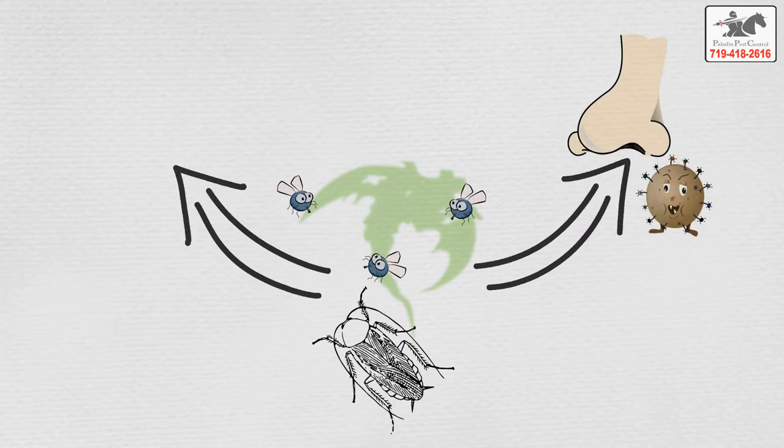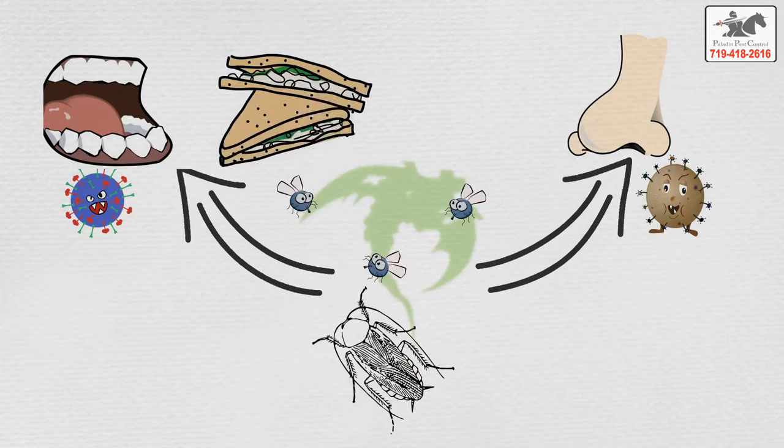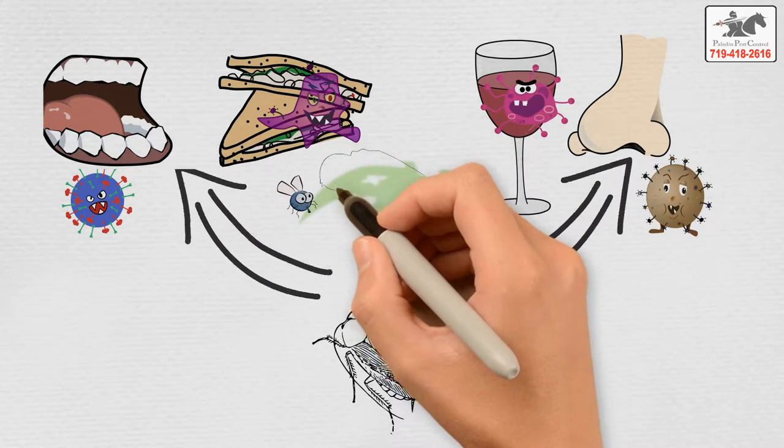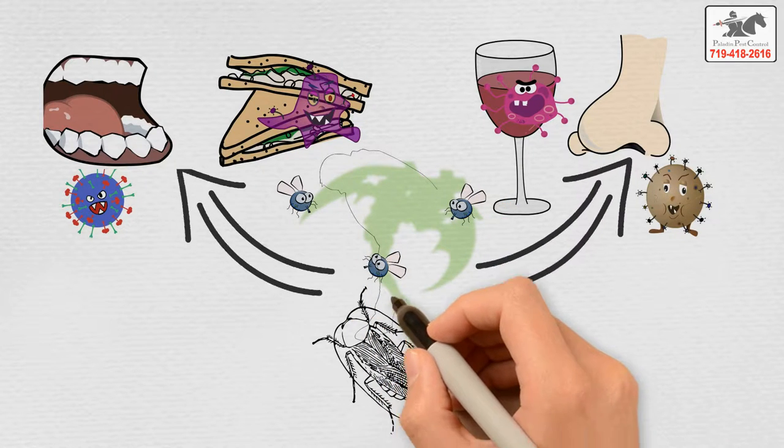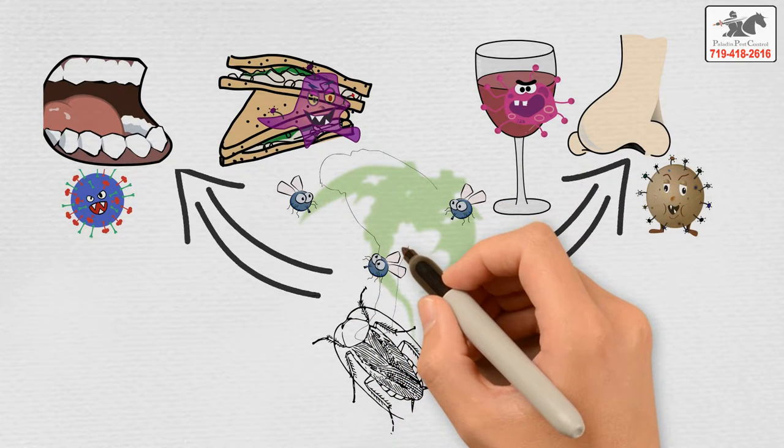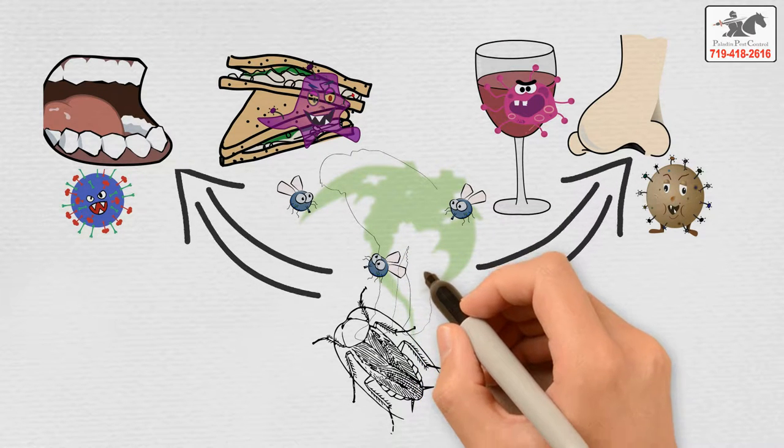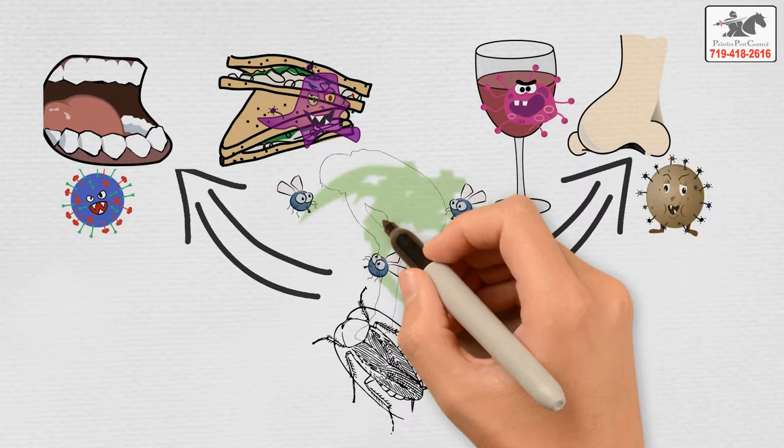Since cockroaches tread in the exact same regions where bacteria, protozoa, and viruses can be found, they are bound to pick them up. When they get the chance to interact with humans in any way, they are bound to leave some of their ill-fated gifts everywhere.